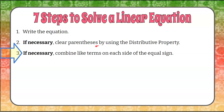Step three: if necessary, we're going to combine like terms on each side of the equal sign. We'll look to the left side of the equal sign and see if there are any like terms, then look to the right side, and if there are, we'll combine them.